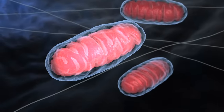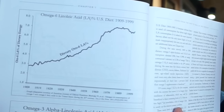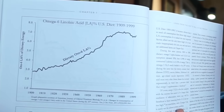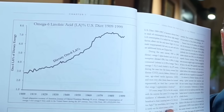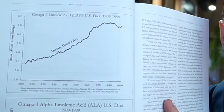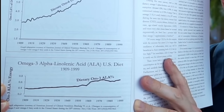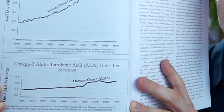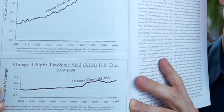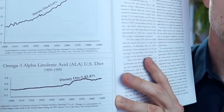I'll show you two graphs right here. The top graph is the omega-6 fatty acids, and the bottom graph is the omega-3 fatty acids. As you can see, the trend for omega-3 is not nearly as high as omega-6.